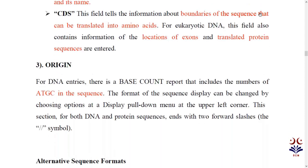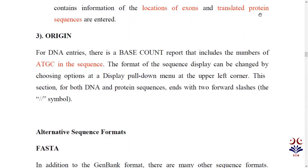The third part is origin. The origin contains the actual nucleotide sequence — the ATGC bases. This is the main part of the primary nucleotide sequence database. From this section, you can copy the nucleotide sequence, save it, and then utilize and analyze it.